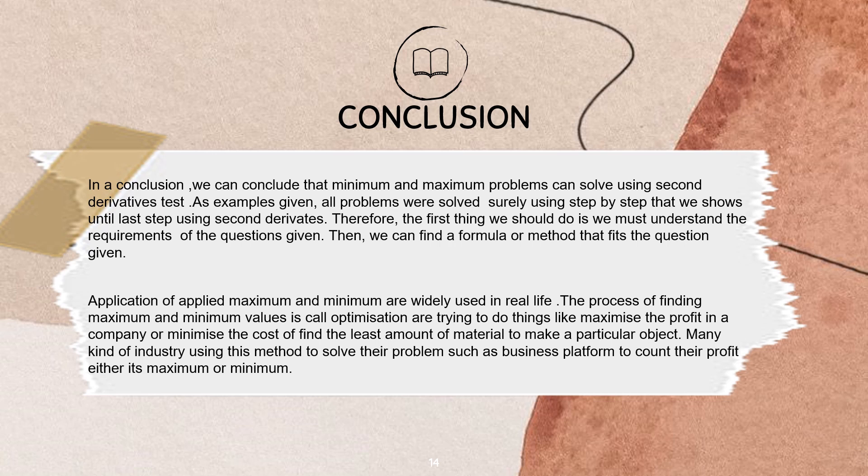Application of applied maximum and minimum is widely used in real life. The process of finding maximum and minimum values, called optimisation, involves things like maximizing the profit in a company, minimizing cost, or finding the least amount of material to make a particular object. Many industries use this method to solve their problems, such as business platforms calculating whether their profit is at a maximum or minimum.